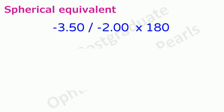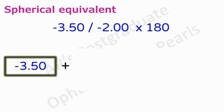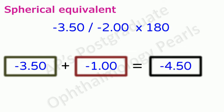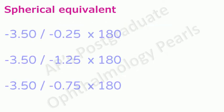One more example. To the sphere we add half of minus 2 which is minus 1 to get minus 3.5 minus 1 that is a spherical equivalent of minus 4.5 diopters.